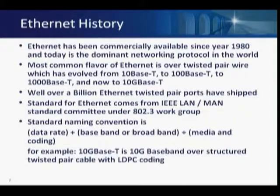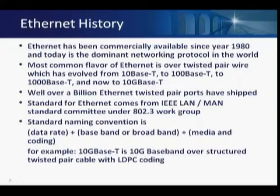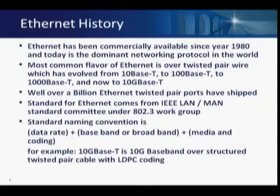I've seen the progression of Ethernet as it got deployed over twisted pair — from 10 meg to 100 meg to gigabit. And now recently on copper, it's going to 10 gigabit per second. Ethernet is very commonplace; it's the most dominant local area networking protocol, and over a billion twisted pair ports have shipped. 10G stands for 10 gigabit per second, base for baseband versus broadband modulation, and T refers to twisted pair and LDPC encoding.